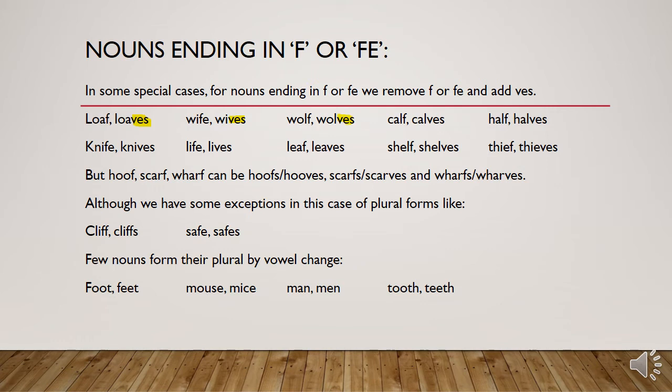So 'hoofs' or 'hooves' — both are acceptable. We do have some exceptions: 'cliff' takes only S, giving 'cliffs'; 'safe' gives 'safes'. A few nouns also form their plural by vowel change: 'foot' becomes 'feet', 'mouse' becomes 'mice', 'man' becomes 'men', and 'tooth' becomes 'teeth'.